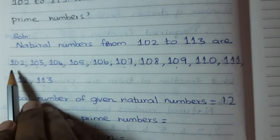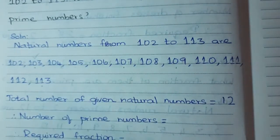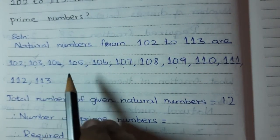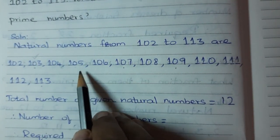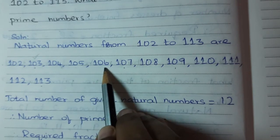So 102, it is not a prime number. 103, it is a prime number. 104, not a prime number. 105, it is not a prime number. 106 is not a prime number.